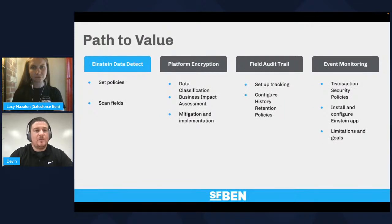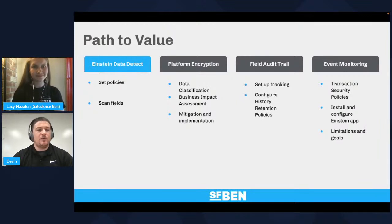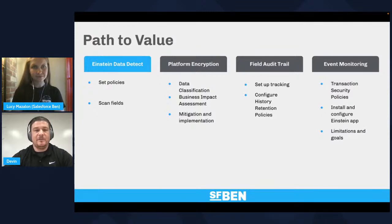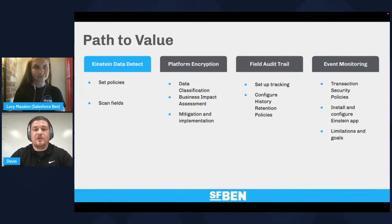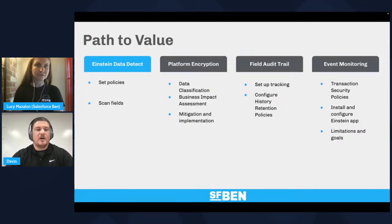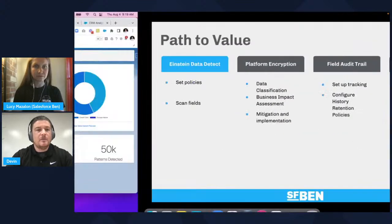Let's jump into a quick demo and take a look at the path to value for Shield. We'll start with Einstein Data Detect and platform encryption first. Einstein Data Detect will allow you to set policies and scan for your sensitive fields — a great input to what needs to be encrypted at rest. Data classification is a great way to start, to define how you're going to protect data and use it as an input to inform how those controls are applied. Let me go ahead and pull up my screen.